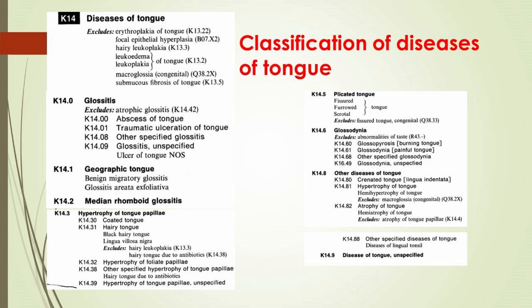Hypertrophy of tongue papillae can present as coated tongue, hairy tongue, black hairy tongue (lingua villosa nigra), hypertrophy of foliate papillae, and other specified hypertrophies, including hairy tongue due to antibiotics.